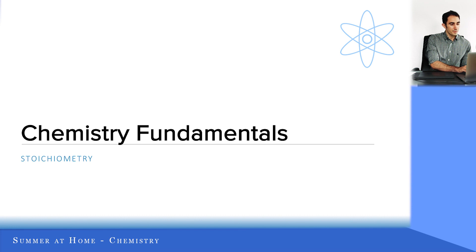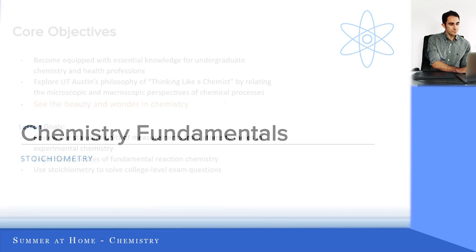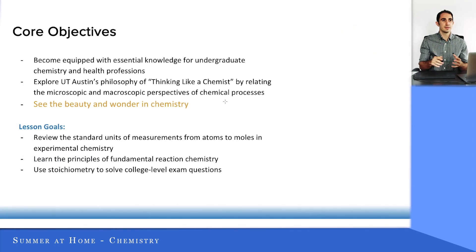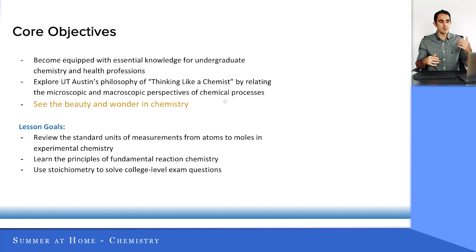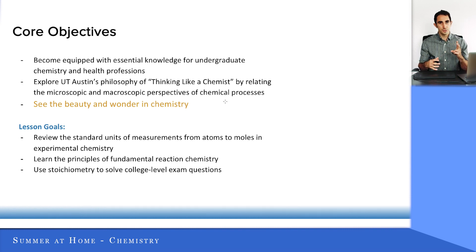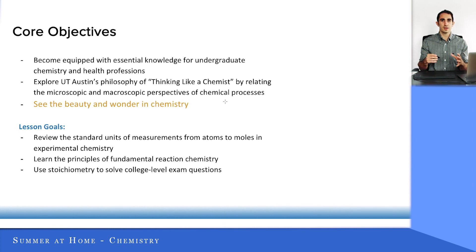So the core objectives for today: the first three objectives are always going to be universal across all four units. These are just the ideas of becoming equipped with the essential knowledge that you're going to need in both chemistry and health professions. Number two, and this is one we're going to talk about a lot today, is explore UT Austin's philosophy of thinking like a chemist.